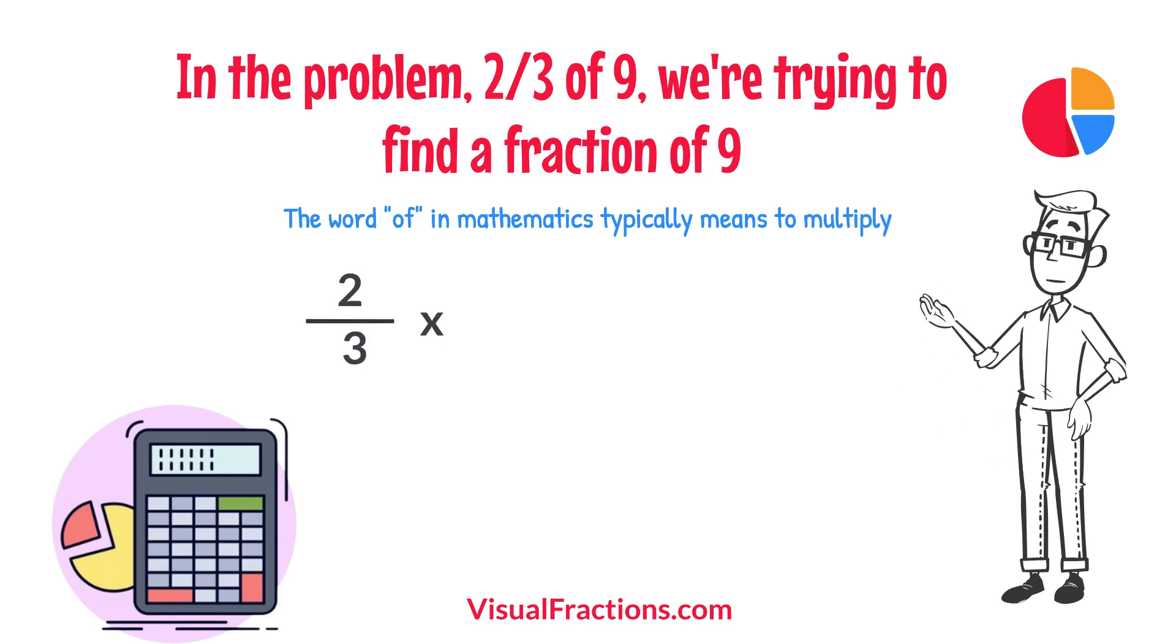To simplify the calculation, we first convert our whole number into fraction form, writing nine as nine over one. This transformation makes it easier to work with our numbers as fractions.